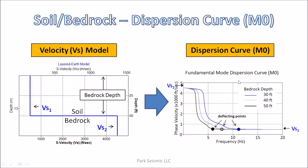When we consider a soil and bedrock system in MASW analysis, we try to estimate shear wave velocity of soil, shear wave velocity of bedrock, and also bedrock depth. These are theoretical fundamental mode dispersion curves for the velocity model shown on the left for three different bedrock depths. They all have a common shape with the same asymptotic phase velocity trend at the high frequency end that approaches the shear wave velocity of soil.